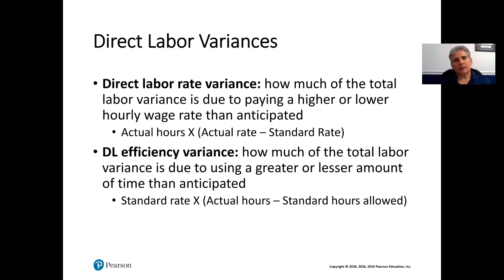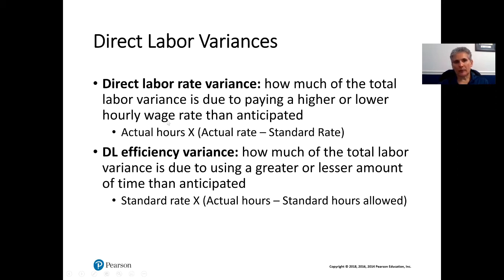The next thing we're going to look at is direct labor variances. The direct labor rate variance is how much of the total labor variance is due to paying a higher or lower hourly wage rate than anticipated. We came up with the flexible budget variance in total, but now we're going to break it down into more detail, just like we did with materials.